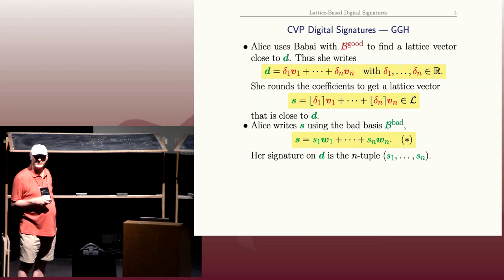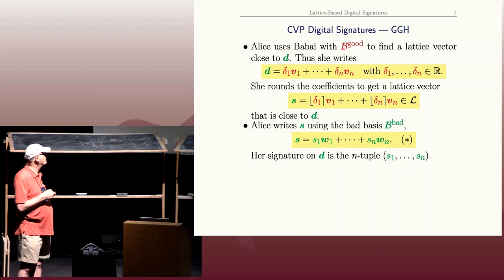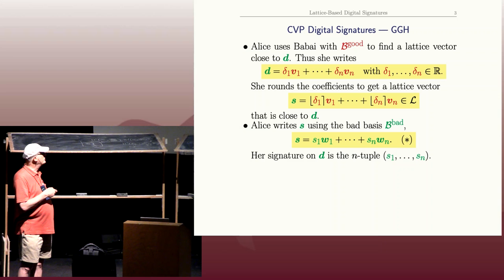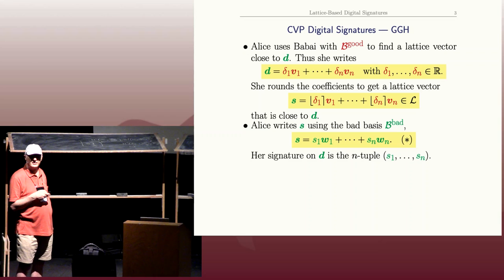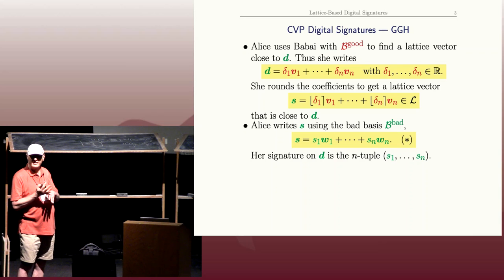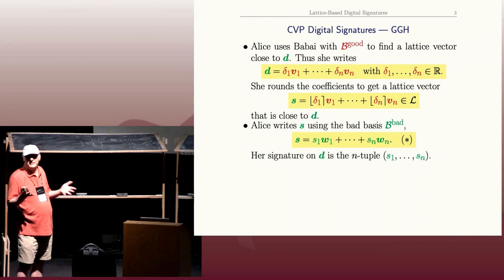This is just a linear algebra problem—it's inverting a matrix or solving a system of linear equations. So d equals this linear combination, but the deltas are not integers. She rounds each of them to the nearest integer. That's Babai's algorithm. The s that she gets will be a lattice point—an integer linear combination of the basis vectors—and it will be fairly close to d. The more orthogonal her basis, the closer it'll be.